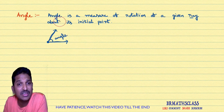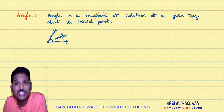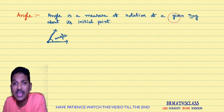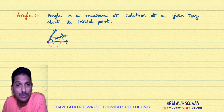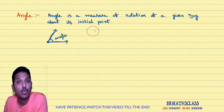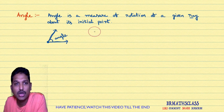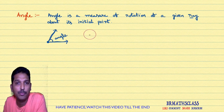Please try to understand what is angle. It is the measure of rotation of a given ray — how much rotation we do with the given ray about its initial point. Angle is a measure of rotation of a given ray about its initial point.